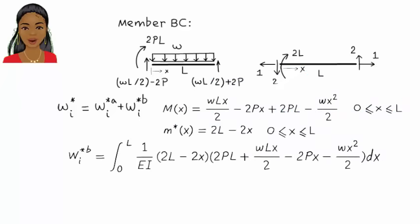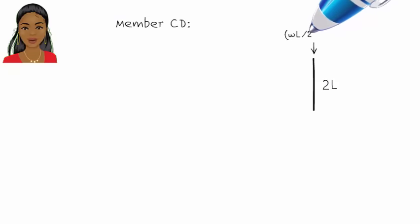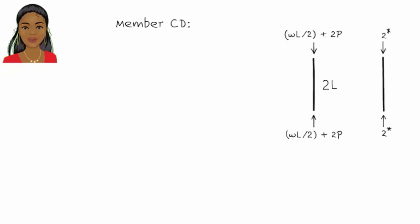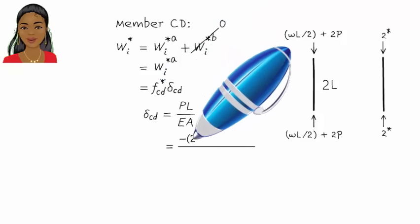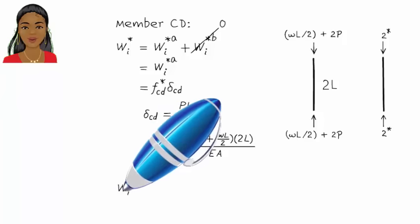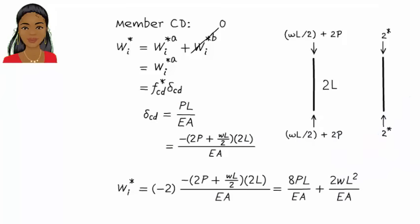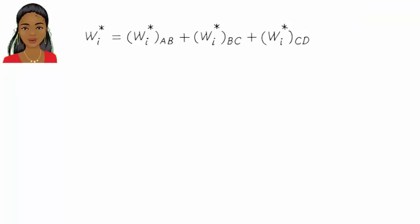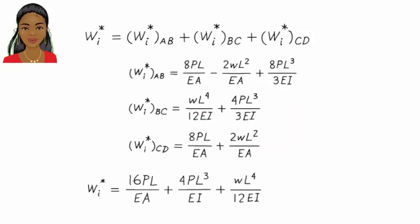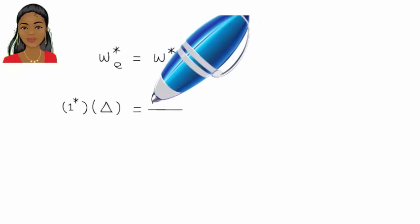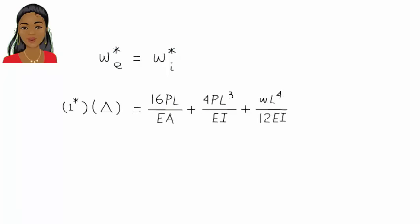Assuming all members have the same E, A, and I, we can write the combined expression. Finally, for member CD, we have the following free body diagrams. Since there is no bending moment in the member, internal virtual work is going to be due to axial deformation only. Axial deformation delta equals 2. Therefore, internal virtual work for CD is calculated accordingly. Now we can express the structure's total internal virtual work as the sum of the three expressions for members AB, BC, and CD. Adding the three expressions and applying the virtual work principle, we can solve for the horizontal displacement at C.